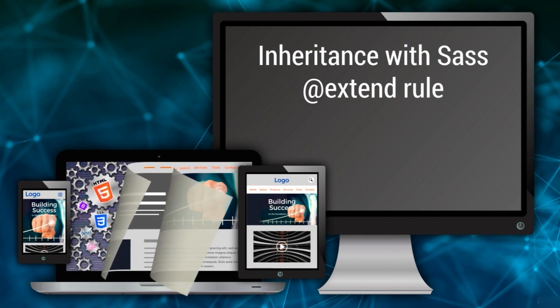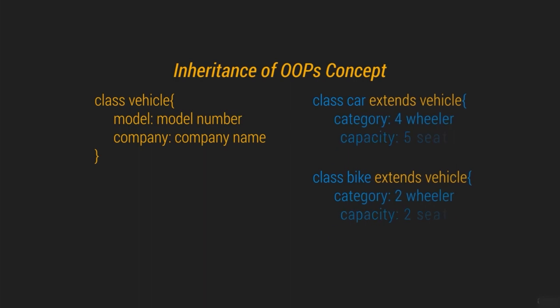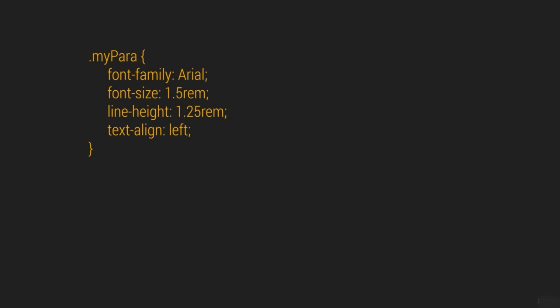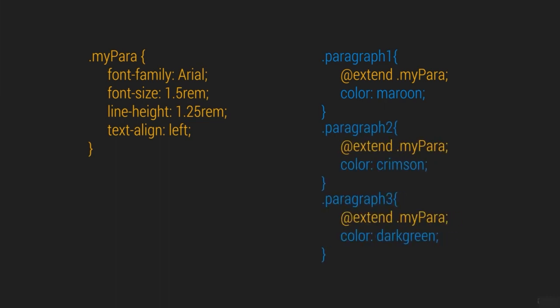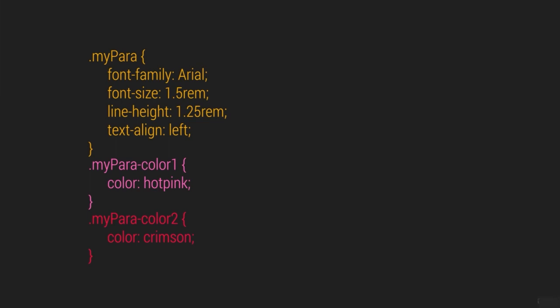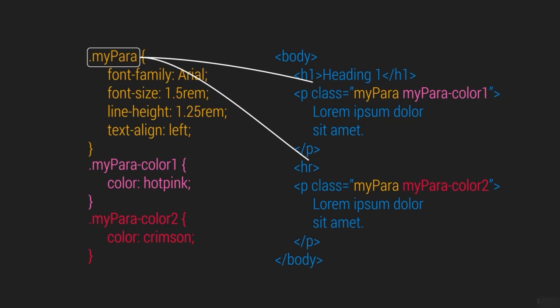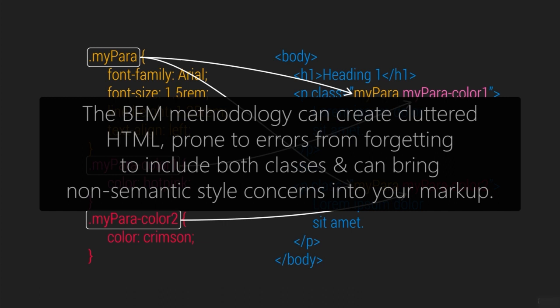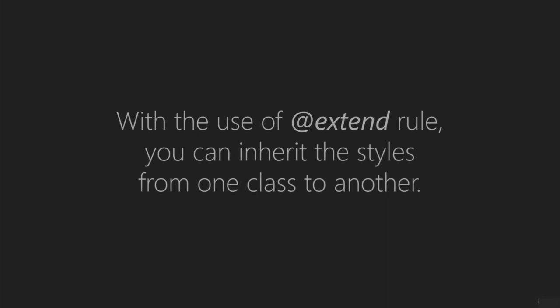Inheritance is the object-oriented programming concept which lets the child element inherit properties of its parent element — this similar functionality is provided by SASS as well. When designing a page, there are certain style rules in one class that should be applied to another class as well, along with the new class having its own styles. While the BEM methodology is useful for sharing styles within selectors, at a certain stage it can create cluttered HTML prone to errors and bring non-semantic style concerns into your markup. This is where inheritance comes in — with the @extend rule you can inherit styles from one class to another.